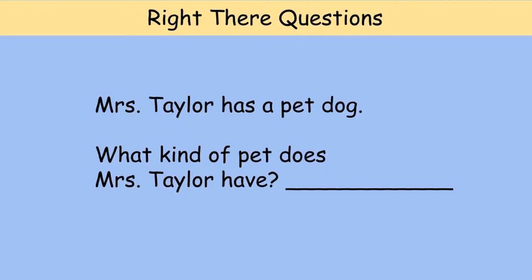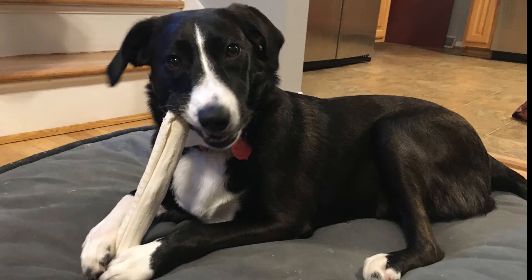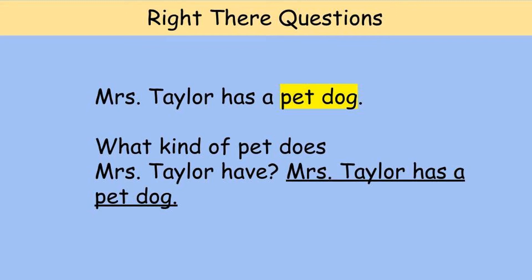Mrs. Taylor has a pet dog. What kind of pet does Mrs. Taylor have? Pause the video and answer the question. That's right — Mrs. Taylor has a pet dog. Her name is Carly. Go back to the sentence in the story, 'Mrs. Taylor has a pet dog,' and highlight the words 'pet dog' because that's the type of pet that Mrs. Taylor has. Now you've proven your answer to the question. That's the easiest type of question out there. Finally, we're going to answer the question in a complete sentence: Mrs. Taylor has a pet dog.